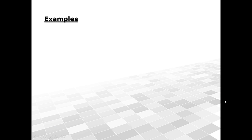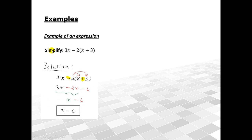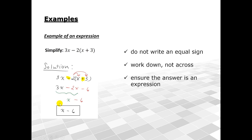Let's look at some examples. An example of an expression is to simplify 3x minus 2 times x plus 3. Looking at my solution, notice I did not write an equal sign. I work down, not across, and I even use color to show each step. And I ensure my answer is an expression.